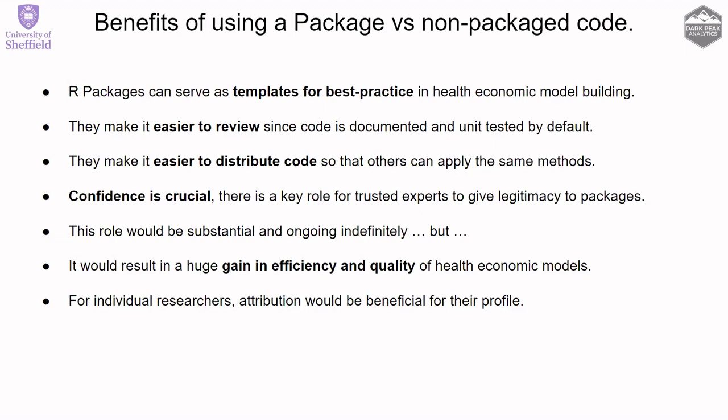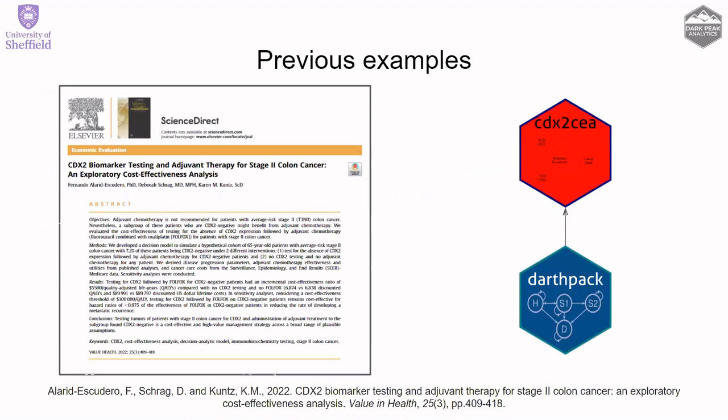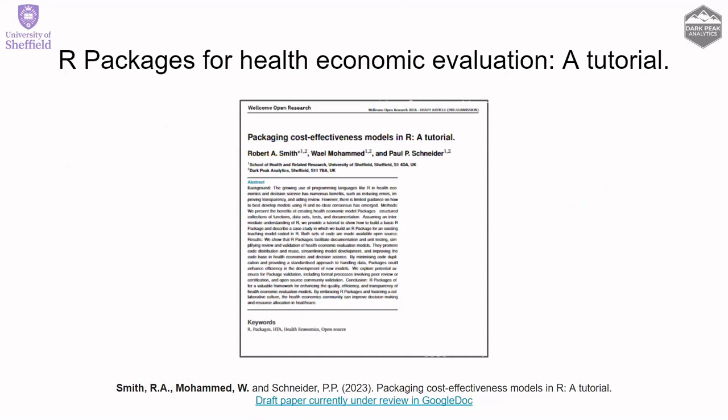There are previous examples: Fernando's paper on biomarker testing was constructed as a package, and the DARTH group have a template package already created. We've written a parallel paper referencing that one, guiding users through the more basic process of building a package from scratch for their model, rather than using someone else's template. We guide the reader from the basics of 'I have one function running a very simple model' through to building that into a package, and we share the Google link.